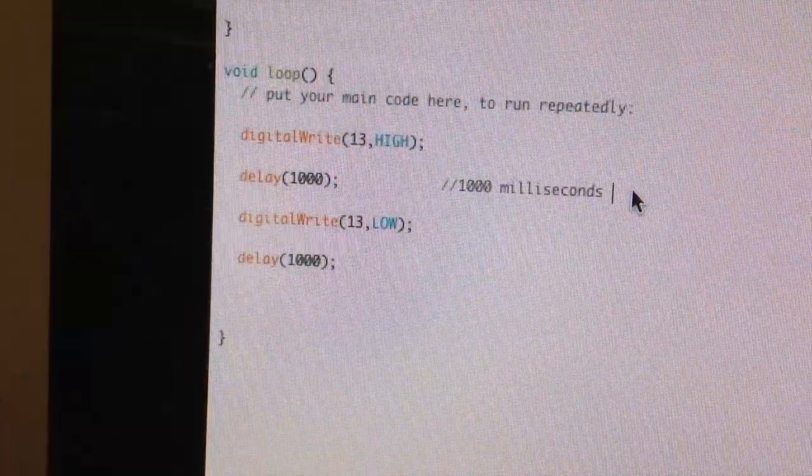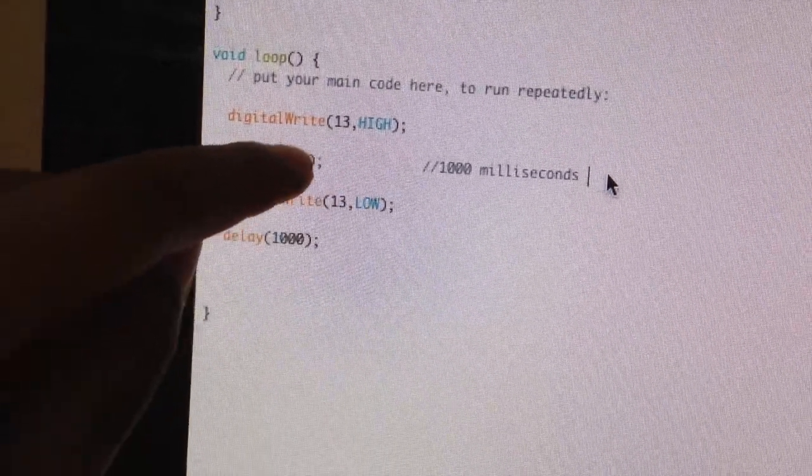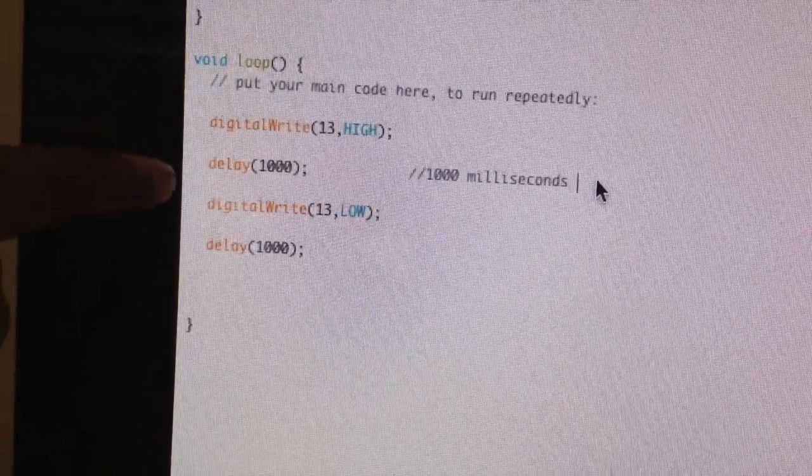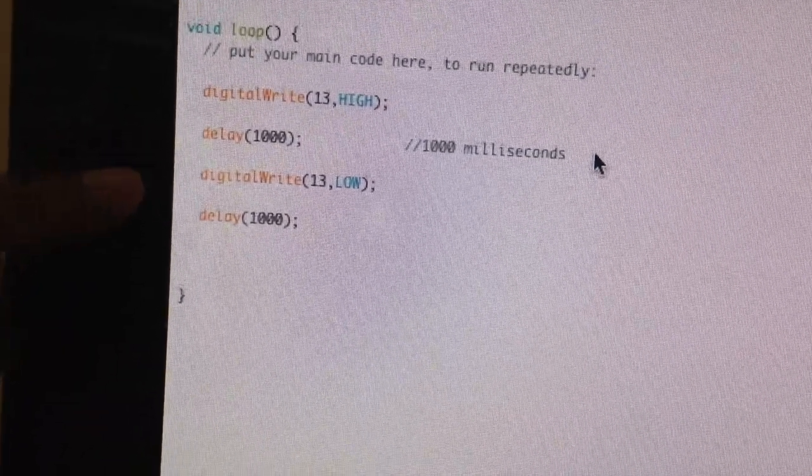In the loop, digital write 13 high means LED on. Delay 1000 means wait for one second.